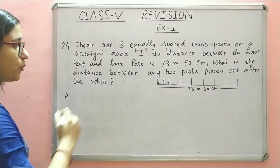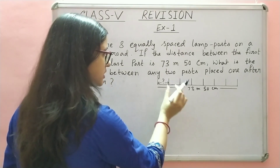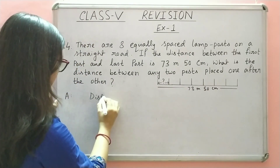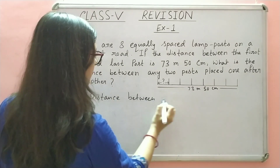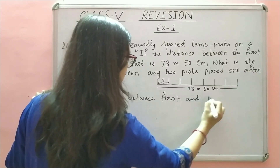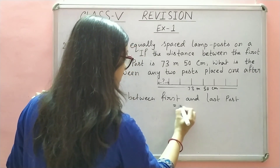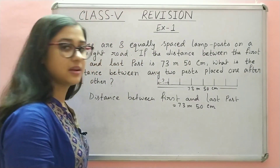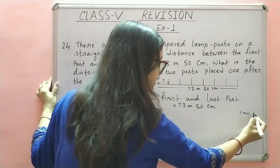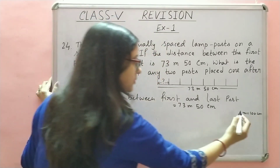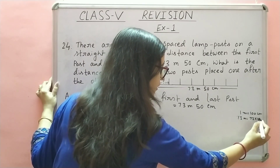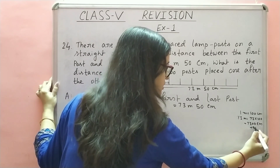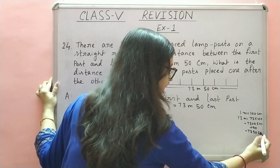What is the distance between any two posts placed one after the other? So, any two post ki beech ka jo distance hai, wo hume nikalna hai. Hum same unit mein lekana hai. 1 meter is equal to 100 centimeter. So, 73 meter is equal to 73 into 100, that is 7300 centimeter. Abhi, jo 50 centimeter hai, wo plus ho jayega. So, kya ho jayega? 7350 centimeter.